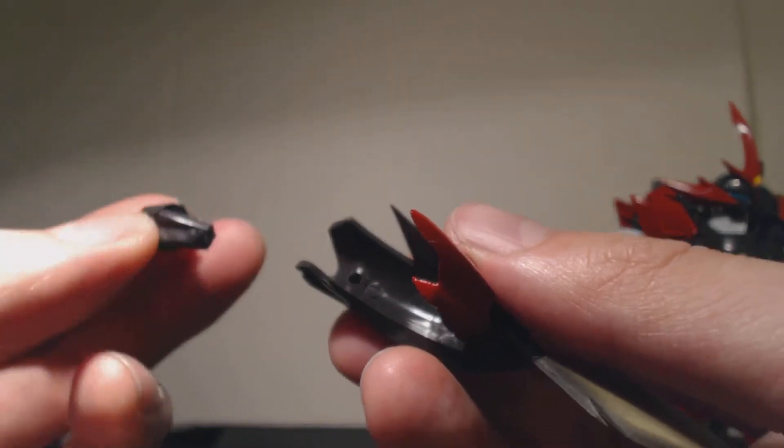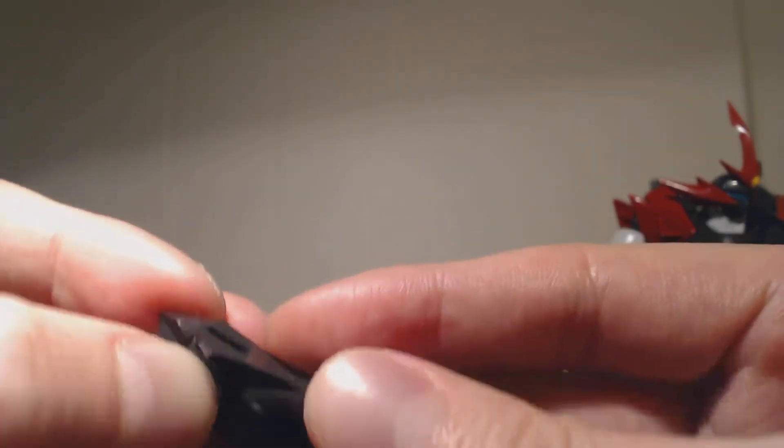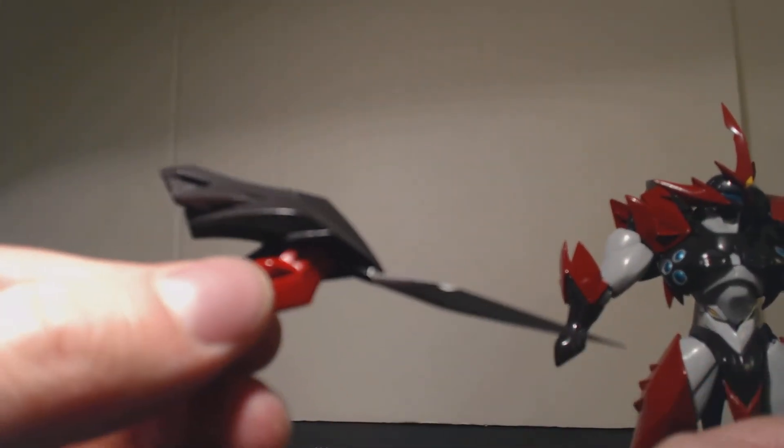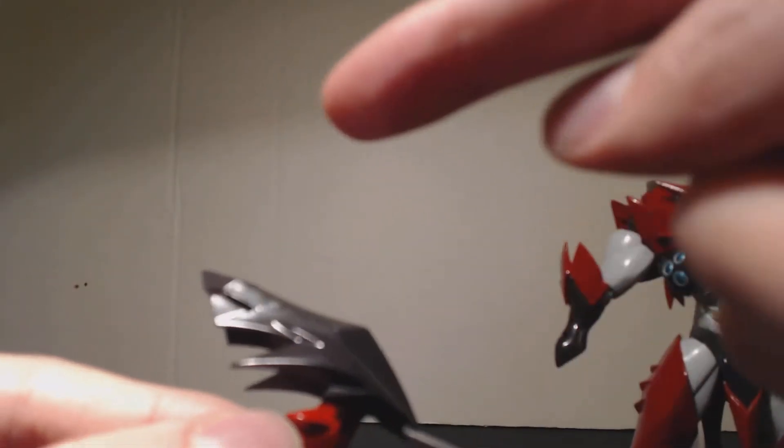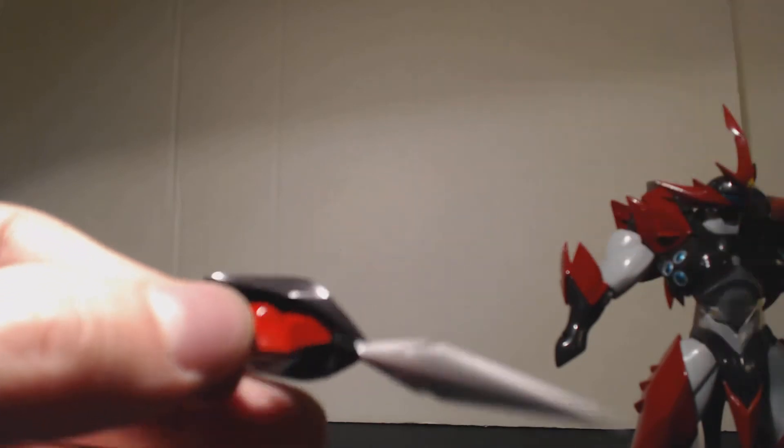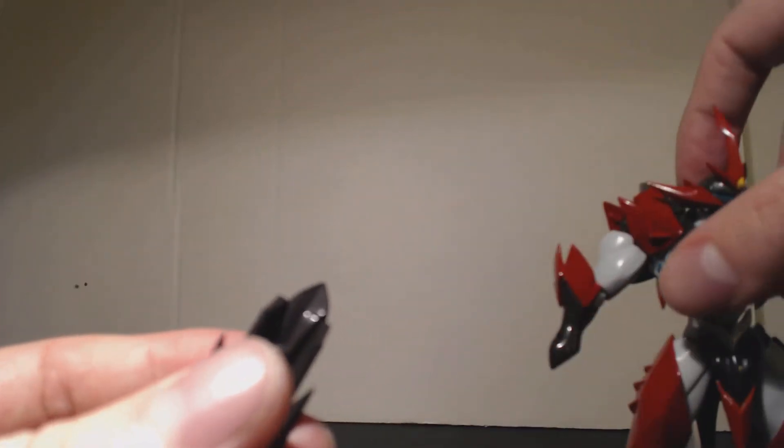So this peg will go into the hole here like so, and it forms a formation like this. So you see now it actually makes the extension of the shoulder armor. And what you can do then is find the peg hole here on Tekkaman Evo's arm.